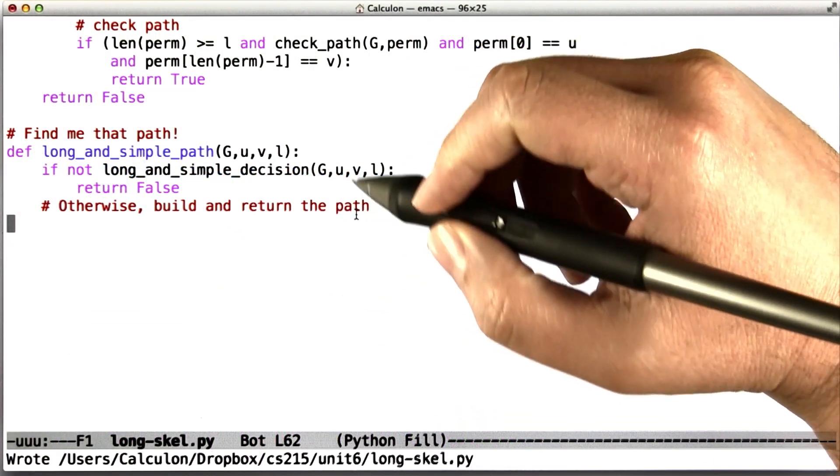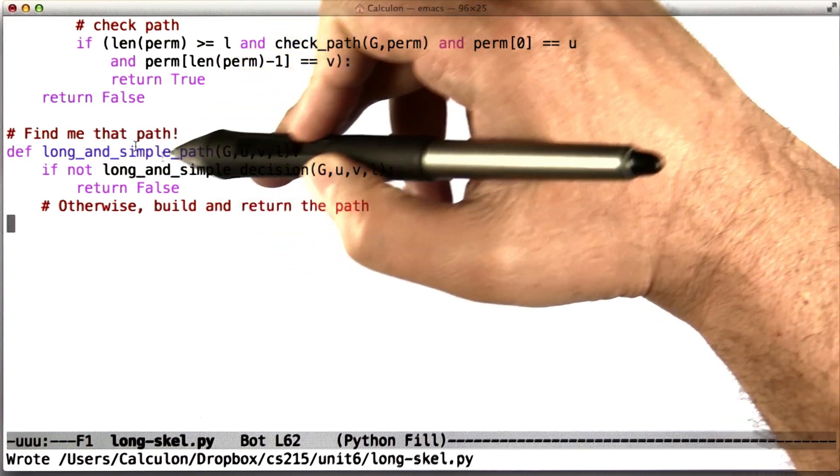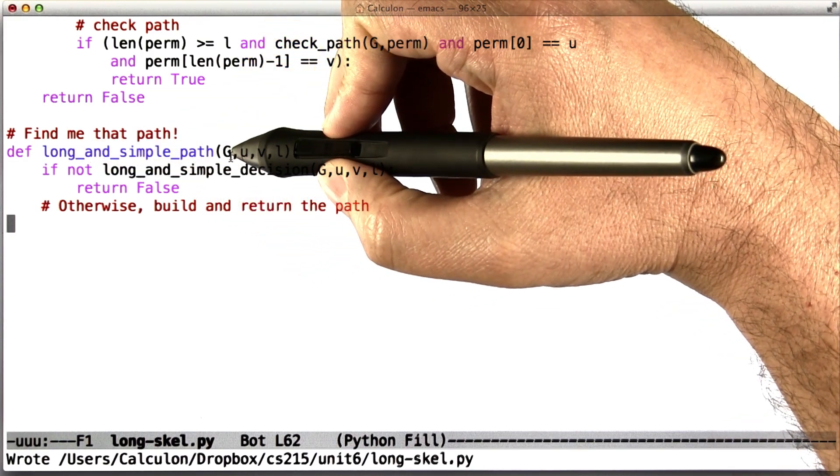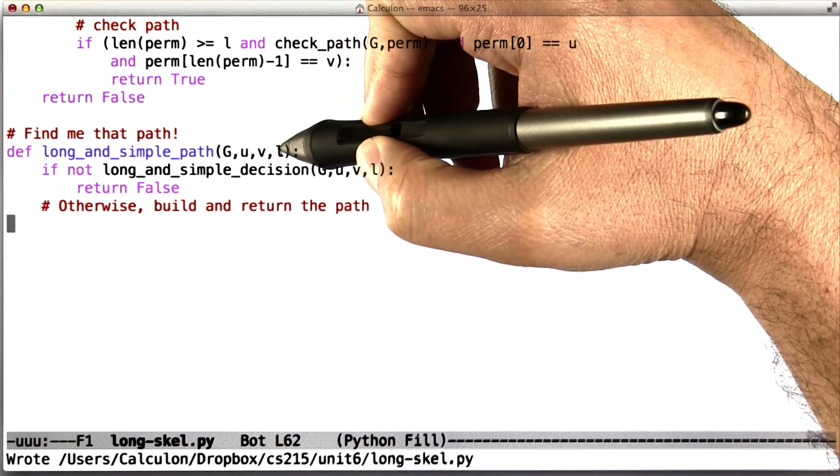All right, so here's how we'd like you to do it. I want you to write a Python command called long and simple path that takes a graph G, and node U, node V, and a length L.